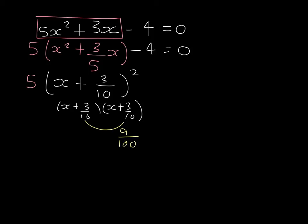But of course that's being multiplied by 5 which would give us 9 over 20. So we have to make sure we subtract 9 20ths and we also subtract 4 which is this original 4 from the first line.